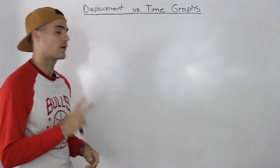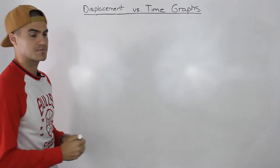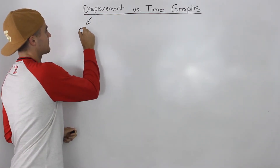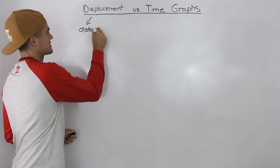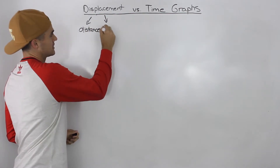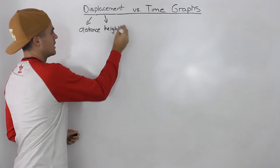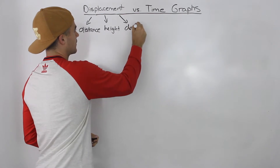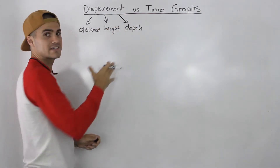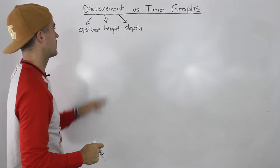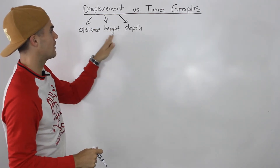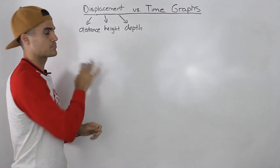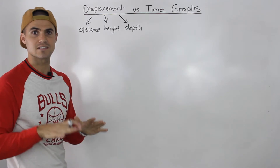Before we get into that, I want to mention two things. First, displacement can mean a lot of different things. You can see displacement expressed as distance, height, or depth. All of these are basically different types of displacement. So whether you're dealing with a distance versus time graph, height versus time graph, or depth versus time graph, they're all a displacement versus time graph and all relate to this video.